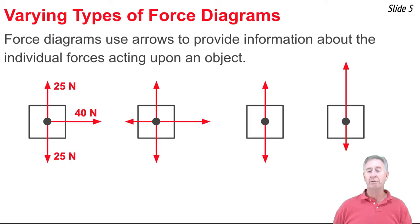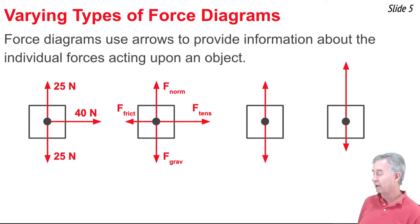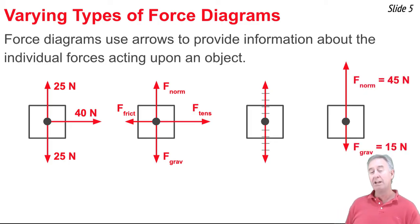Sometimes we actually include information about the strength of the force in terms of a number. Here we see the force values written in terms of the newtons of force. Sometimes we put symbols next to the arrows in our force diagram to indicate the type of force, so we could have a friction force, or a tension force, or a normal force, or a gravity force. If those don't mean anything to you now, they will very soon. And sometimes we can put little gradations or markings upon our force arrows, something like this, and that would indicate that the up force is of the same strength as the down force.